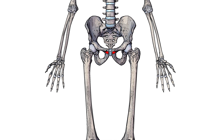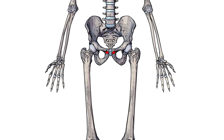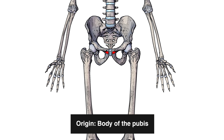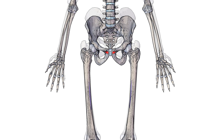Next we can see the origin, marked out here in red, and that's on the body of the pubis. Specifically, that origin is inferior to the pubic crest.